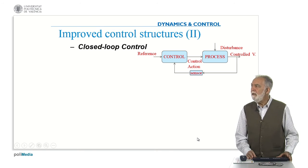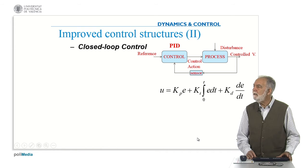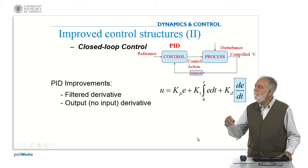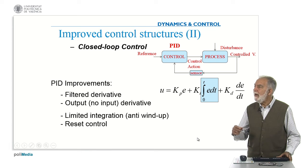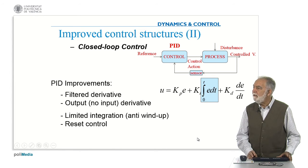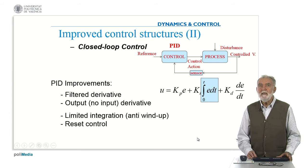In the case of closed-loop control, the basic controller is a PID. We can improve this PID because the derivative term becomes very large if the input changes suddenly. So we can filter the derivative, or use the derivative of the output instead of the derivative of the error. Also, the integral term, if acting for a long time, can increase and distort the behavior of the plant. So we may use limited integration — called anti-windup — and reset control, which periodically resets the integral to zero.